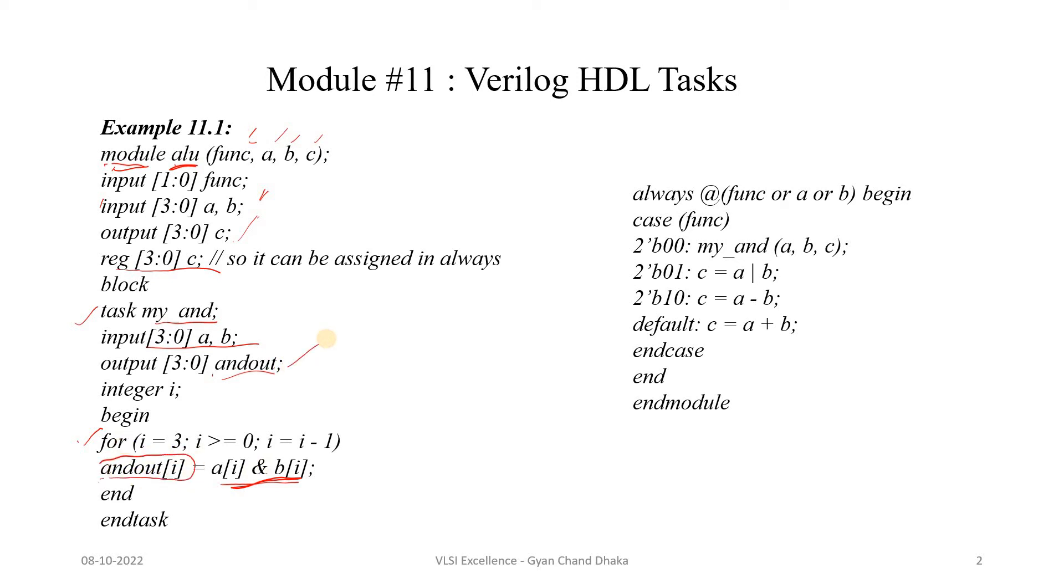Now let's see how we can invoke this task. This is one always block here. This always block actually has a sensitivity list which contains func, a, and b, three input ports or input signals. Based on the func value, here we have a case statement. Based on the func value, if the func value is zero, that means we are going to call the my_and task. This task is basically doing an AND operation.